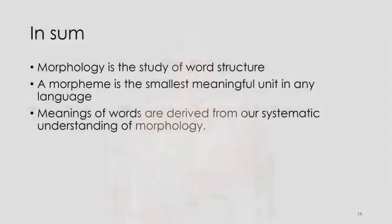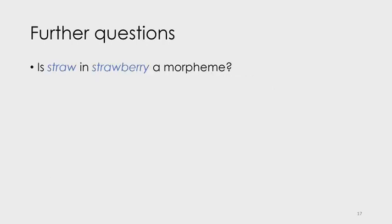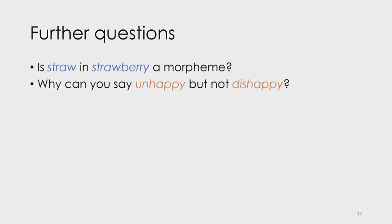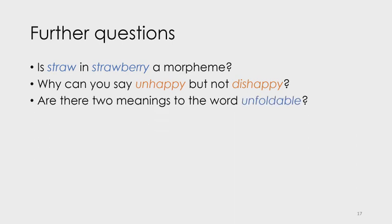In sum, morphology is the study of word structure, and the morpheme is the smallest meaningful unit in any language. Meanings of words can also be derived from our systematic understanding of morphology. I'd like to leave you with a few questions to think about: Is straw in strawberry a morpheme? Why can you say unhappy but not dishappy? Are there two meanings to the word unfoldable? What about unforeseeable — would you construct one or two trees? I hope you've enjoyed this class, learned something new and fun, and I might see you sometime in the future at NUS. Thank you for your time.